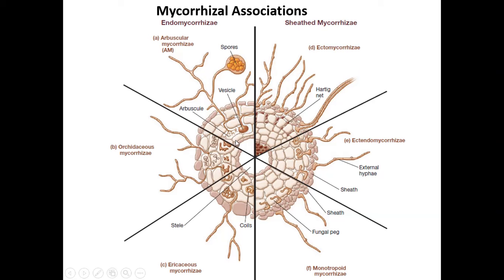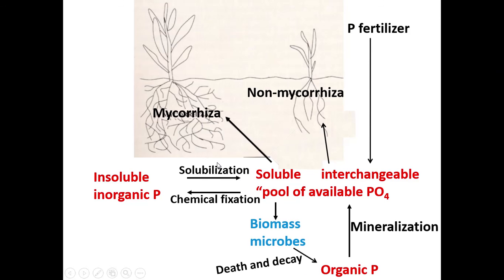You can easily see the difference between the two: in endomycorrhizae most things are internal, while in ectomycorrhizae most things are external. Ectomycorrhizae form Hartig nets, as discussed in the last section. Let's talk about the pictorial depiction of both a mycorrhizal and a non-mycorrhizal association in a plant.